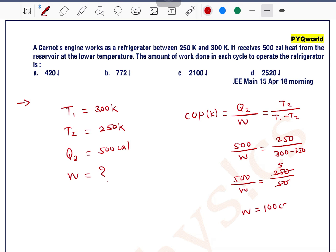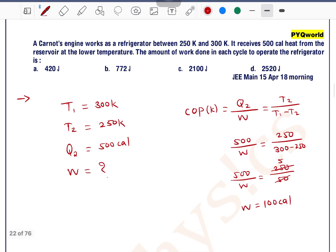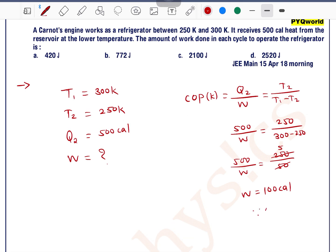100 calorie. Work is equal to 100 calorie, and we know that 1 calorie is equal to 4.2 joule. So we can write this as 100 into 4.2 joule, which is equal to 420 joule.